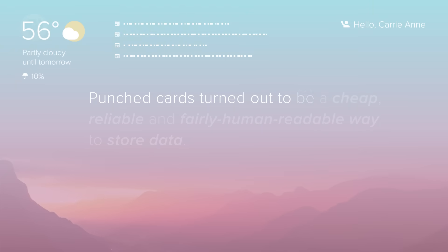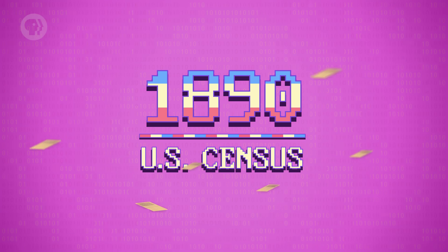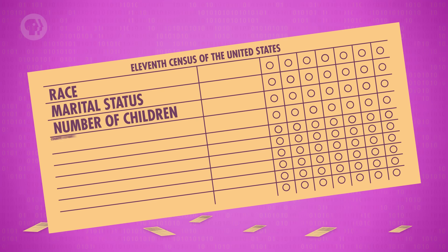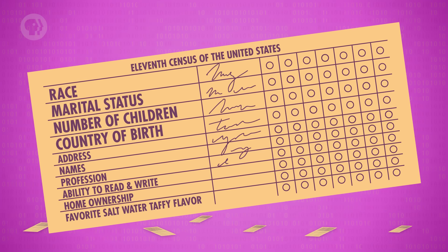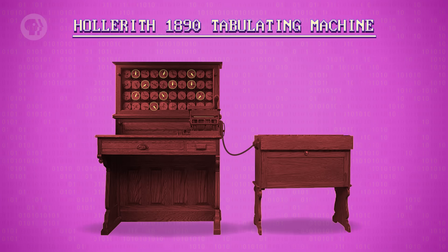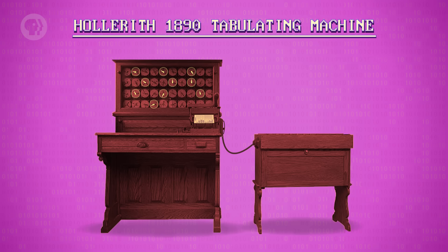Punched cards turned out to be a cheap, reliable, and fairly human-readable way to store data. Nearly a century later, punch cards were used to help tabulate the 1890 US Census. Each card held an individual person's data – things like race, marital status, number of children, country of birth, and so on. For each demographic question, a census worker would punch out a hole at the appropriate position. When a card was fed into the tabulating machine, a hole would cause the running total for that specific answer to be increased by one. In this way, you could feed the entire county's worth of people, and at the end, you'd have running totals for all of the questions asked.